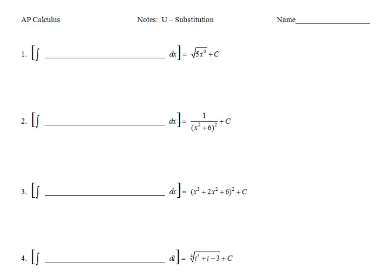Our next objective has us returning to integrating indefinite integrals. This time we're going to take a look at more complicated derivatives and how to integrate them. We've worked with the reverse power rule and integrating the trig functions. Now it's time to look at what happens when the derivative we're trying to integrate is a little more complicated. We're going to use a technique called u-substitution to help us integrate those complicated integrands. Before we get to that technique, it might be helpful to revisit the chain rule, so we can look at the structure of the derivative and identify what we need to integrate these complicated derivatives.